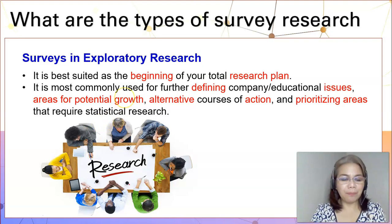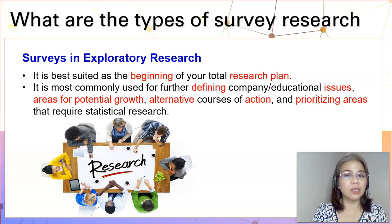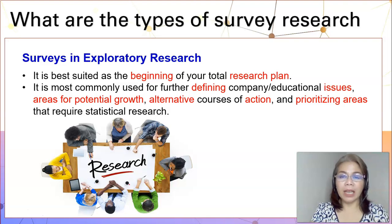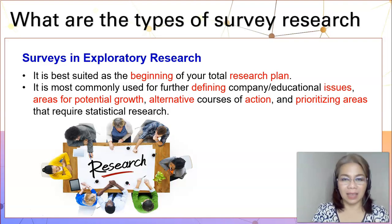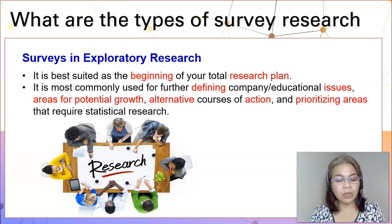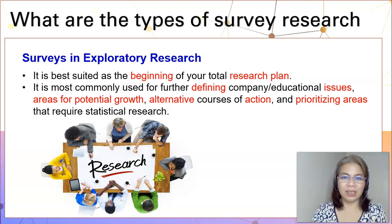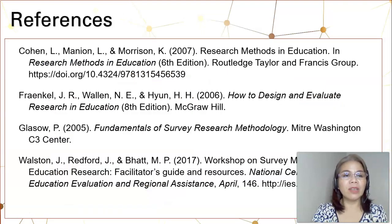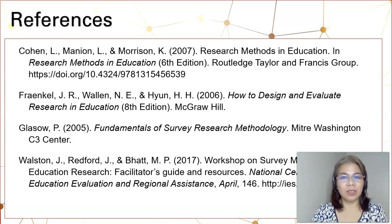To recap, survey research is used to describe the characteristics of a population that is too large to study directly. Therefore, we need careful planning of probability sampling and a standardized questionnaire to get data from our respondents. The different types of survey research are descriptive, correlational, causal, and exploratory research. I would like to bring you to the different references that I have used in this video tutorial. I hope you have learned something from this video presentation. Thank you very much and bye-bye.